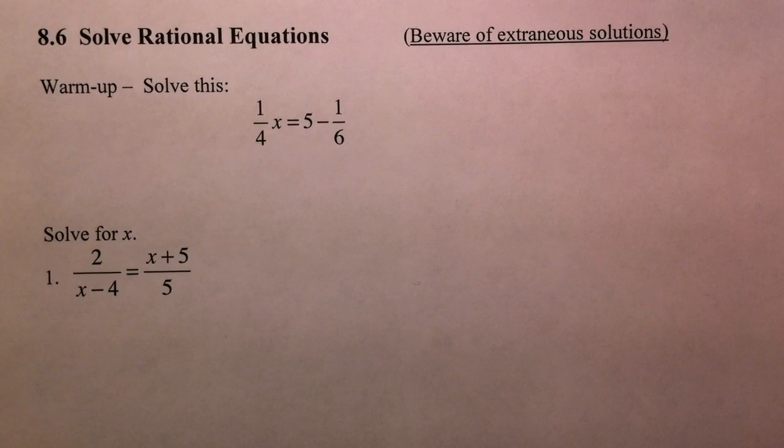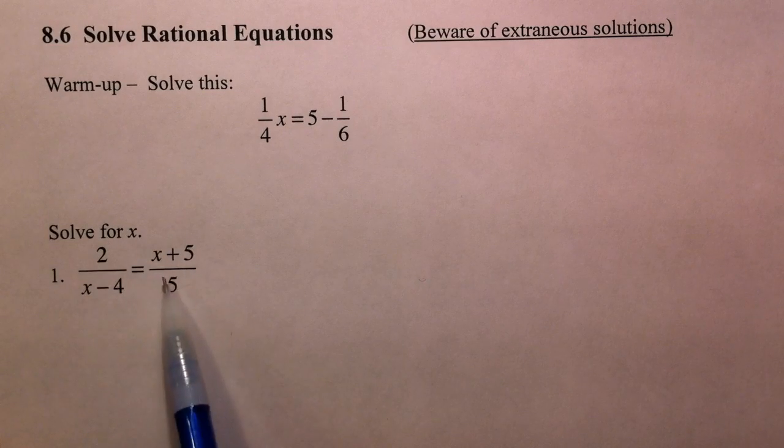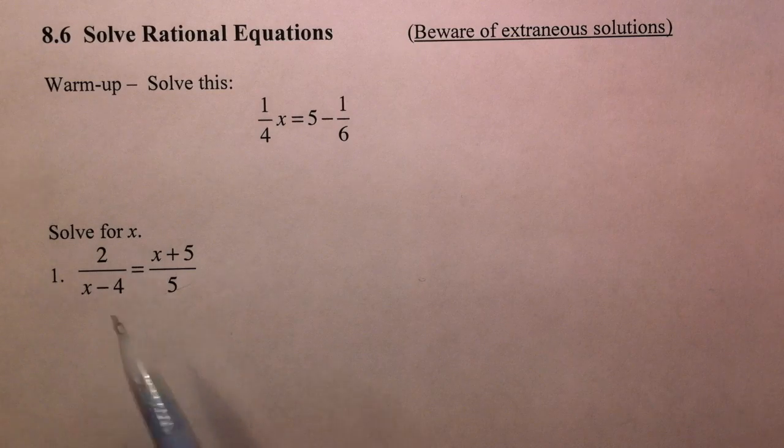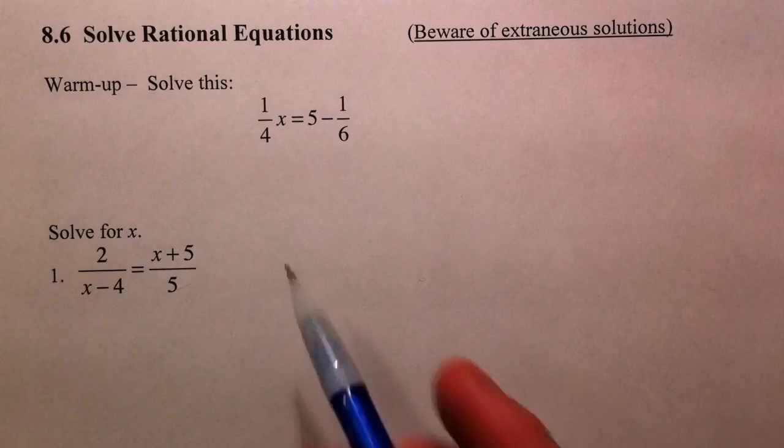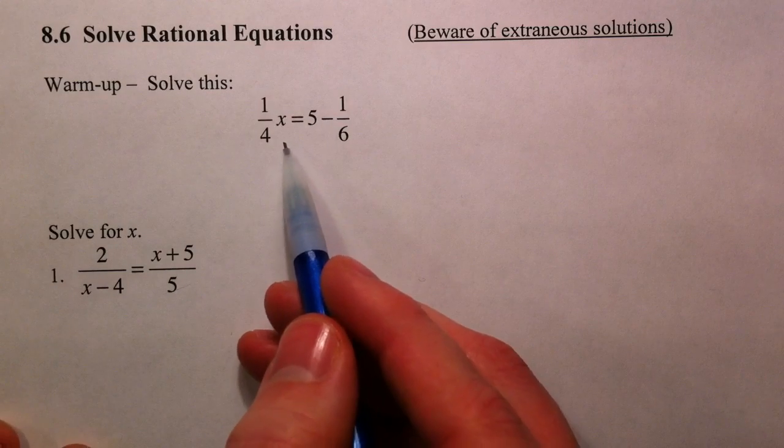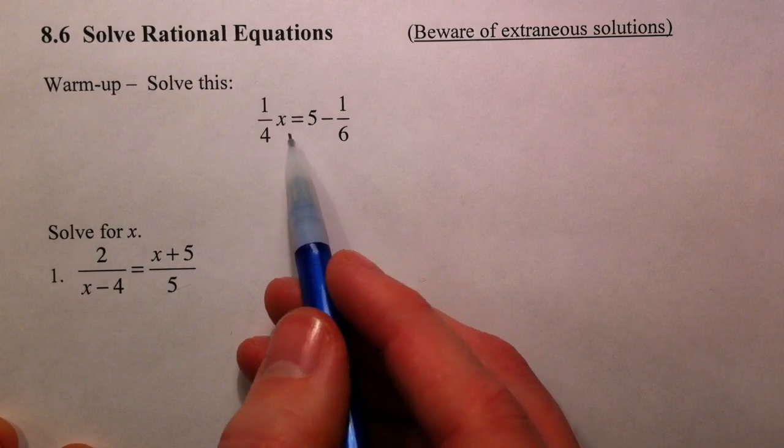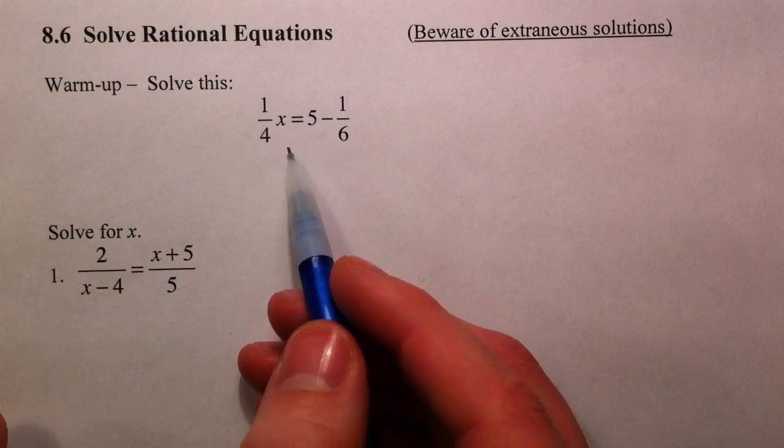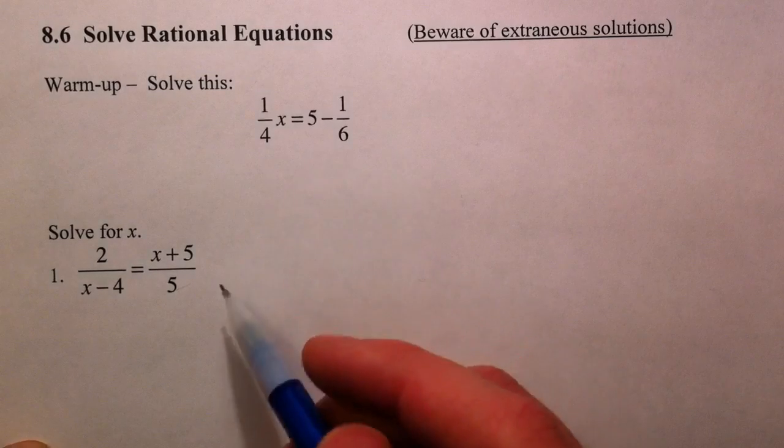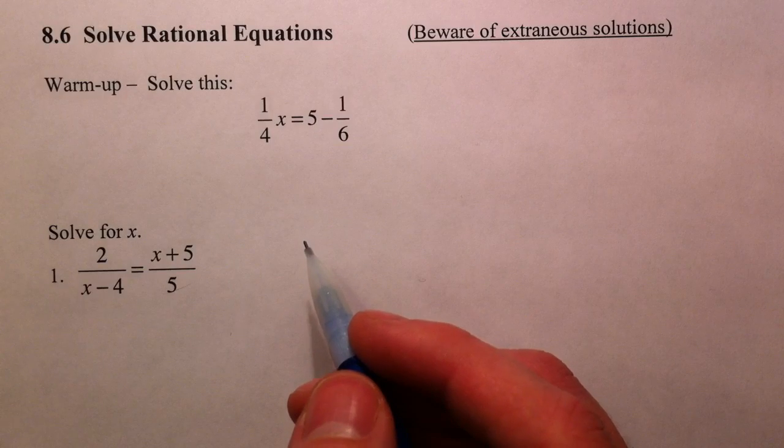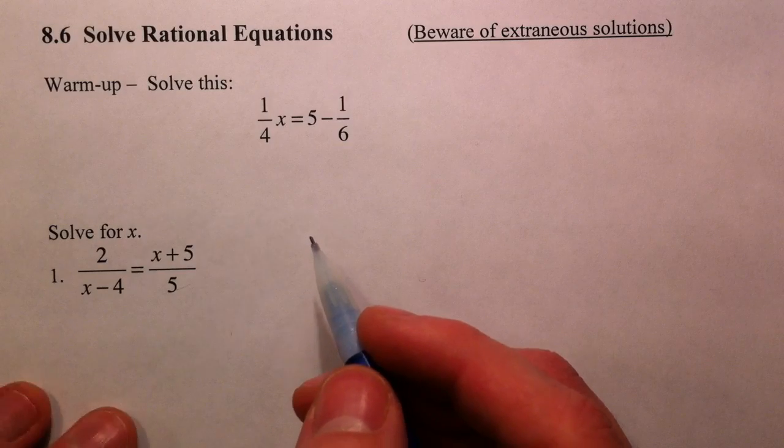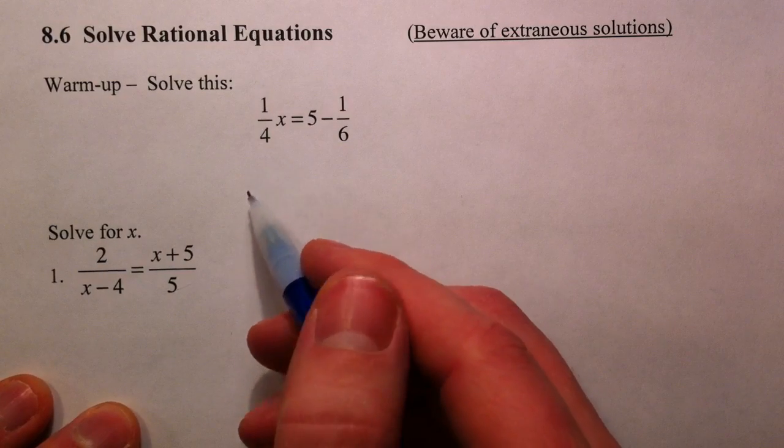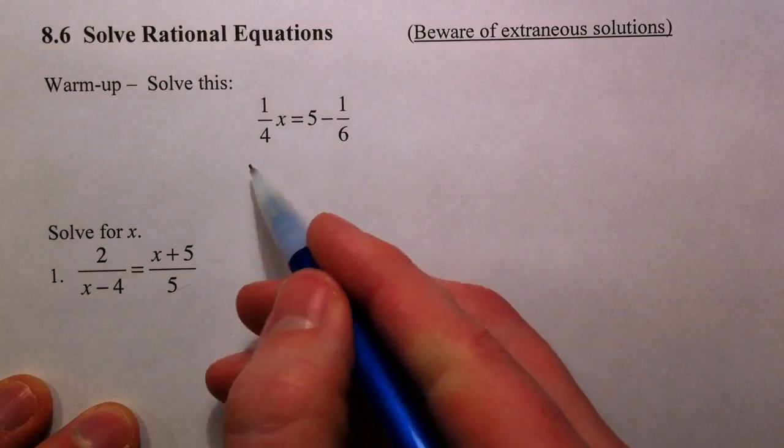Now we're solving rational equations. We'll see rational expressions but now we've got an equation, so we're solving for x. Starting with a basic one with fractions—I can't stand fractions, so I like to get rid of them as soon as I can. If we multiply through by the lowest common denominator, it'll kill the fraction. They're complicated and it doesn't need to be that complicated.